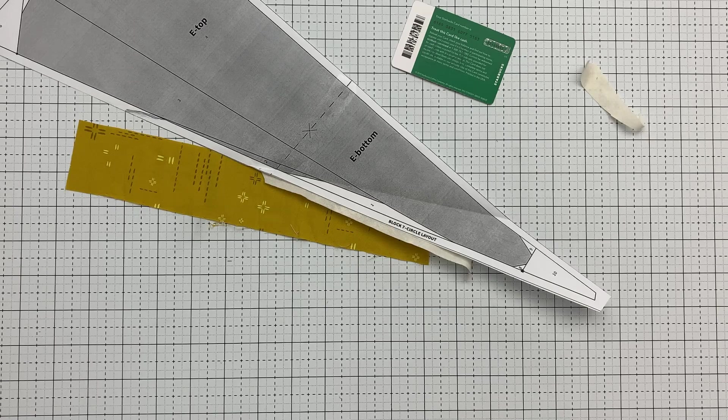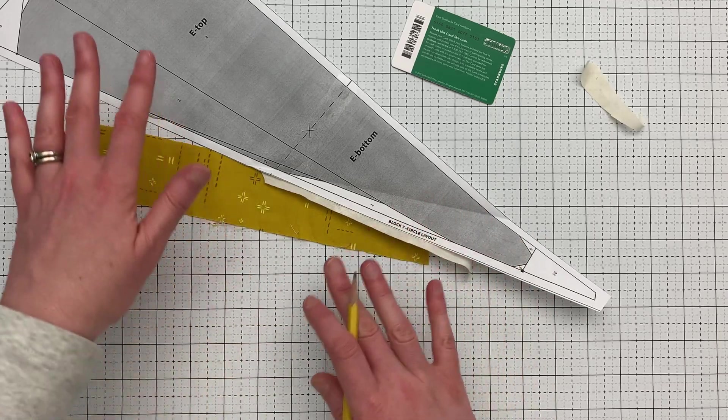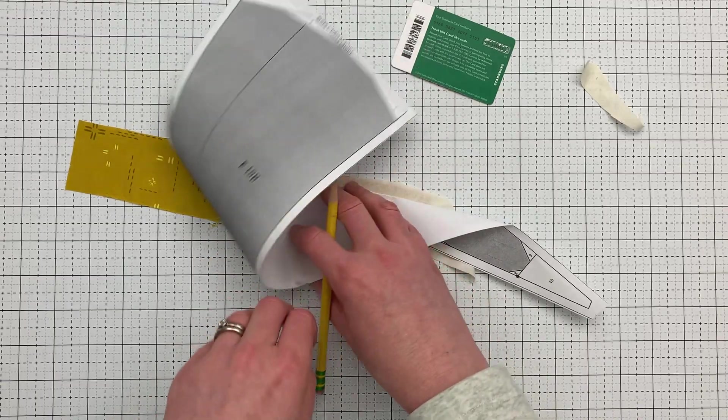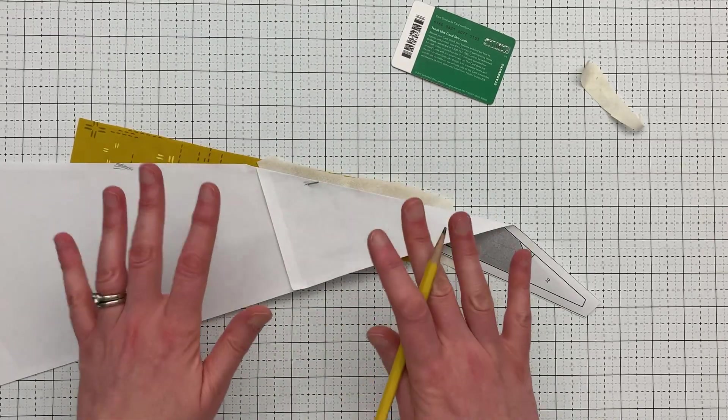If you still need some extra help figuring out how to arrange your fabric before you sew, go on and check out the videos I did for block 3 and block 6. Again, those links are below.